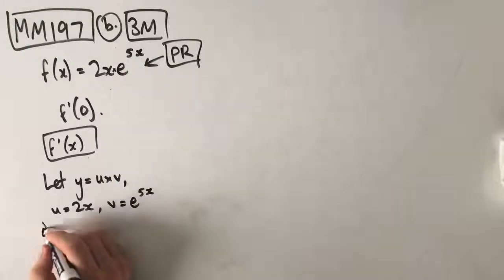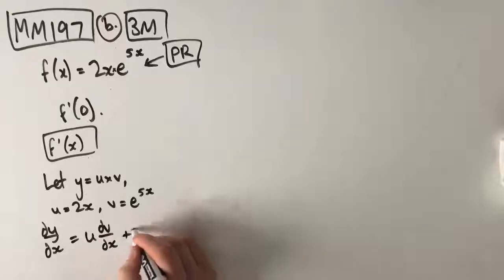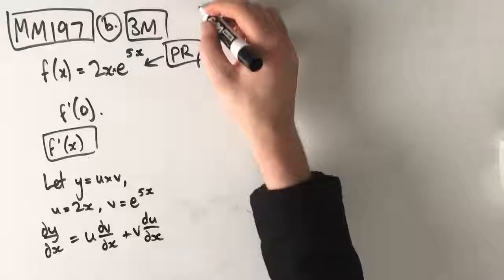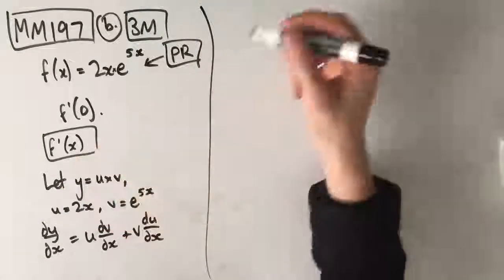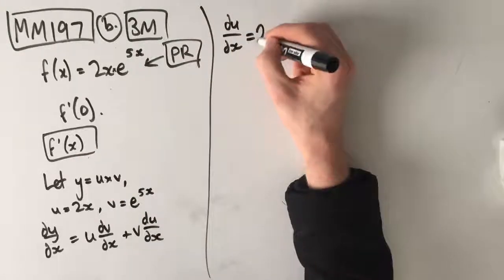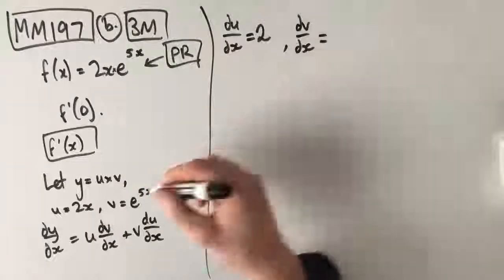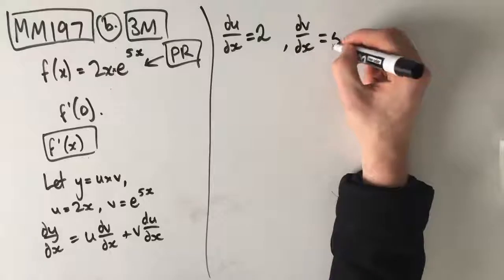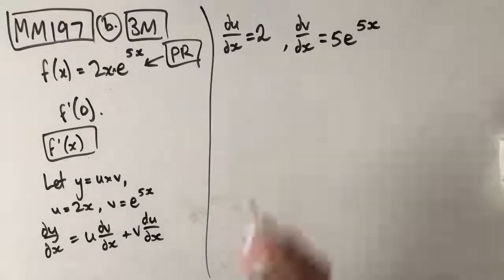We know that the dy dx is equal to u times dv dx plus v times du dx. We're going to now come up here and we're going to say that we know that u is equal to 2x. So, du dx is equal to 2. Derivative of 2x is 2. And dv dx is equal to 5e to the power of 5x.